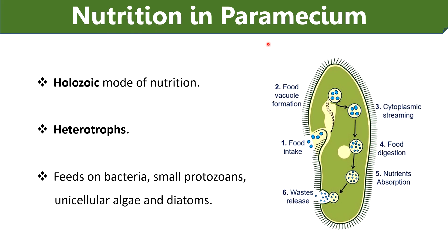Nutrition in paramecium: The mode of nutrition in paramecium is holozoic. They are heterotrophs, which means they feed on bacteria, small protozoans, unicellular algae, diatoms, etc. Paramecium captures food by oral cilia, then the captured food goes inside the gullet through the mouth pore. The food is ingested with a little surrounding water to form a food vacuole. Parameciums have intracellular digestion, meaning food is digested inside the food vacuole. Digestive enzymes released by the cytoplasm help in breaking down the food. The digested food is absorbed directly into the cytoplasm by diffusion. After absorption, the food vacuole shrinks, and the absorbed nutrients are stored and utilized for energy synthesis. Undigested food is expelled out of the body.